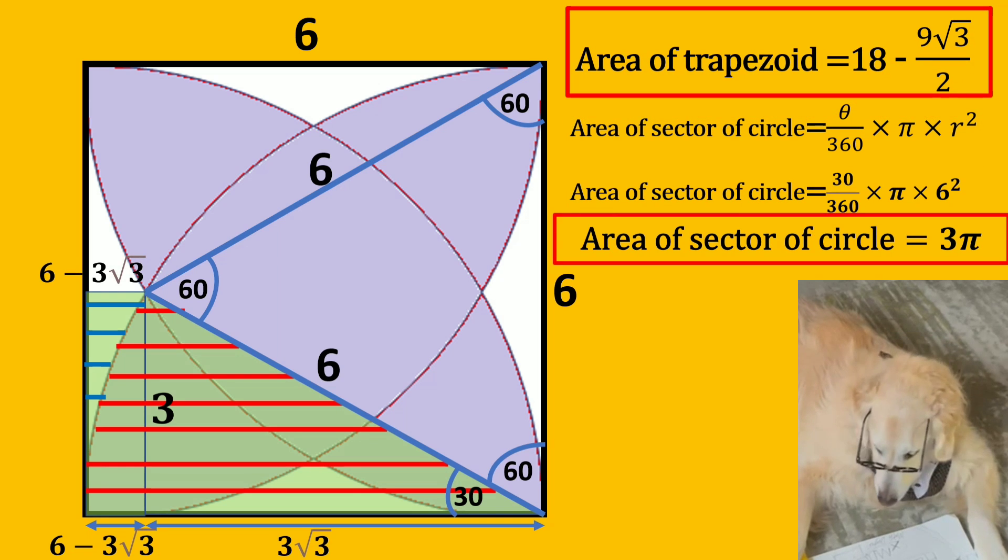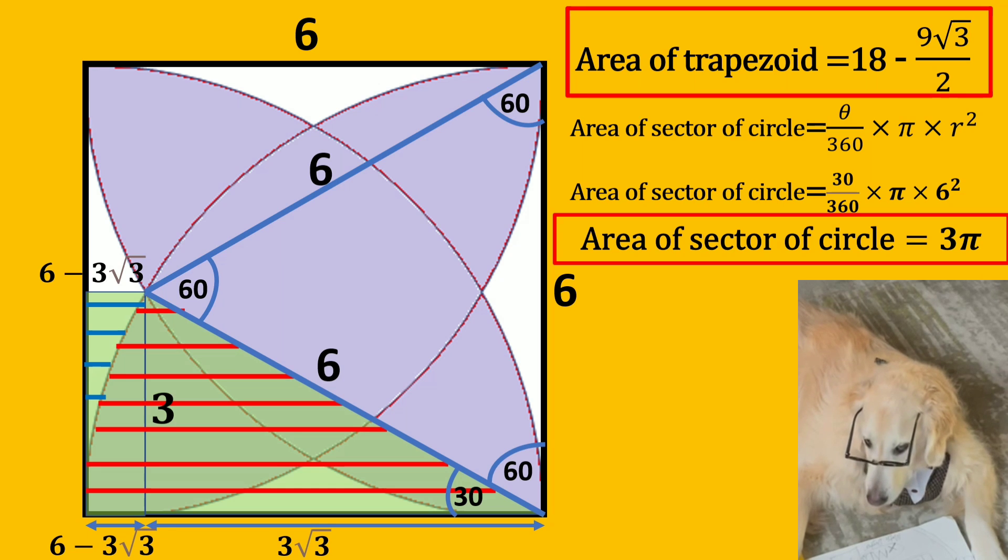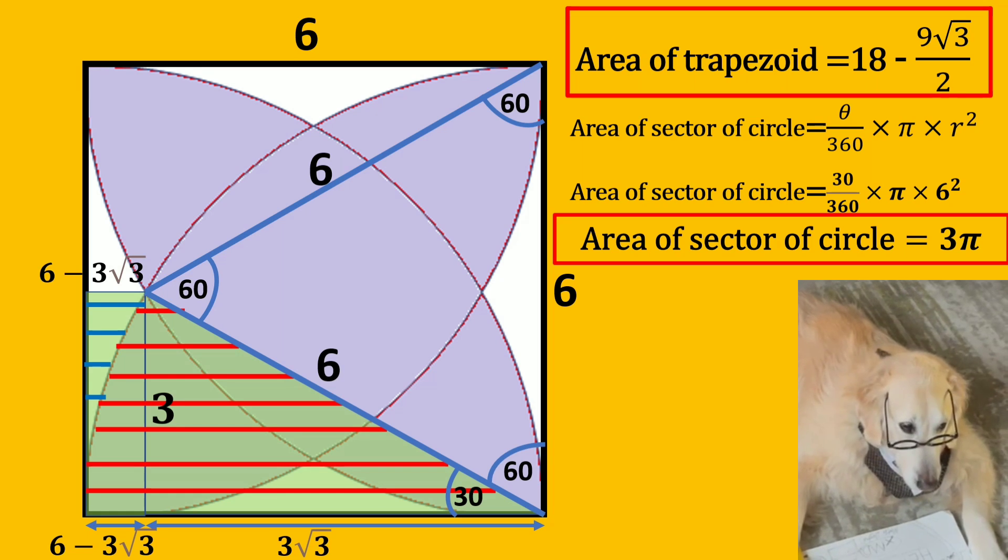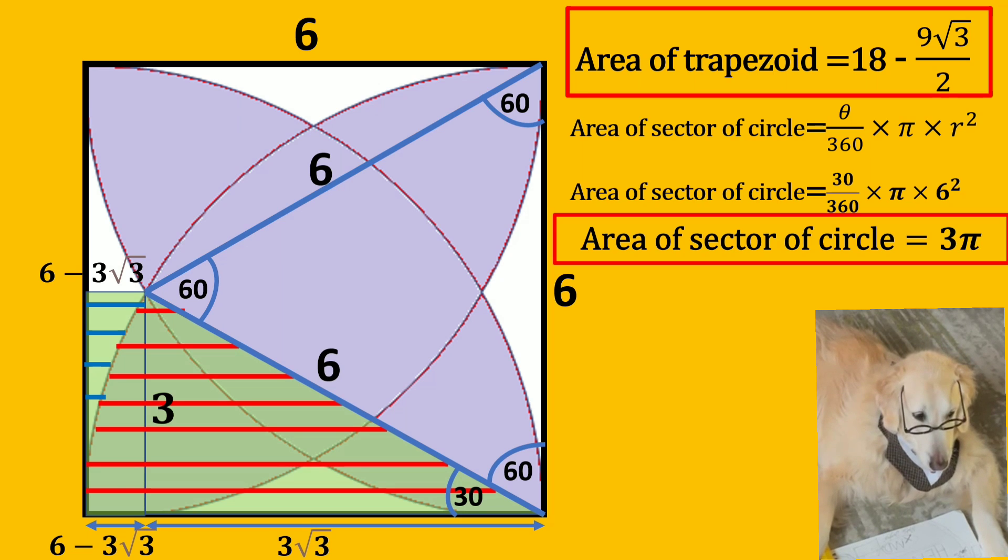Now our goal is to find red striped area which is a sector of a circle. Here the angle of this circle sector is 30, so in our area of sector formula theta is equal to 30. Our radius is equal to 6, so the area of the sector of circle is 3π.